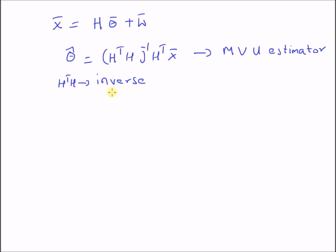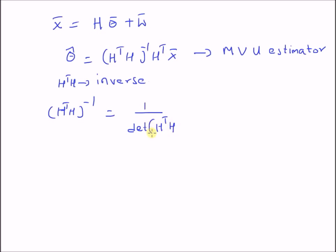If this is satisfied, then the minimum variance unbiased estimator exists for the unknown parameter vector theta bar. By definition, the inverse (H^T H)^{-1} is defined as one over the determinant of H^T H, multiplied by the adjoint matrix of the product H^T H. For this inverse to exist, the necessary condition is that the determinant of this matrix should be non-zero.